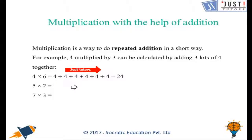Let's take a few more examples. Here we have 4 multiplied by 6. That will be same as adding 4 six times. That will be 24. And next we will have 5 multiplied by 2. That means we will add 5 to itself 2 times. That will be 10.